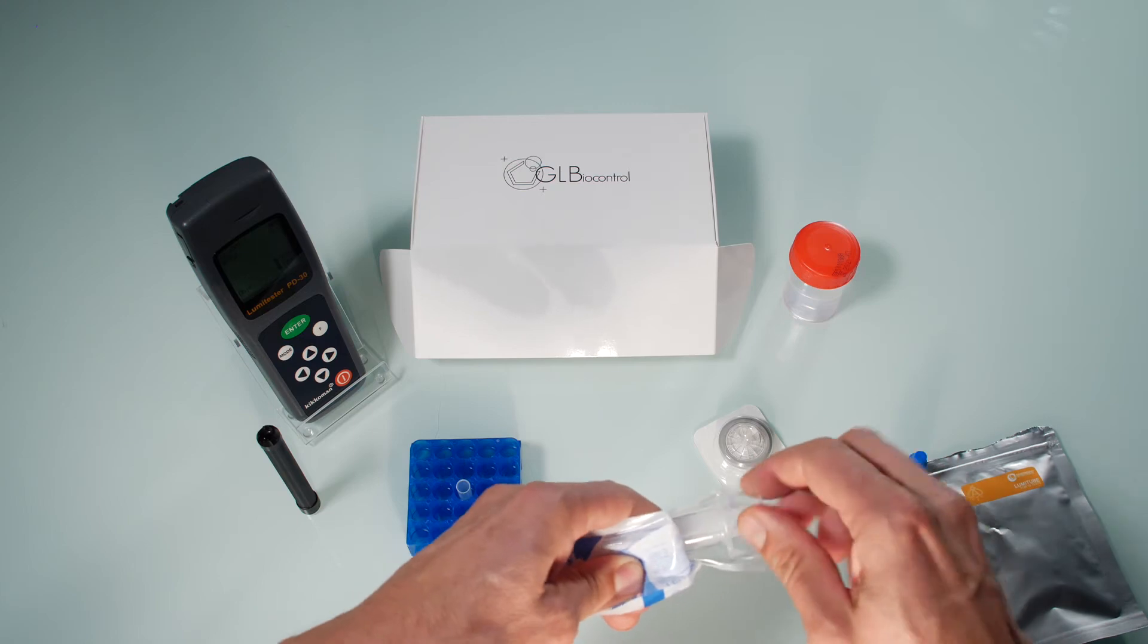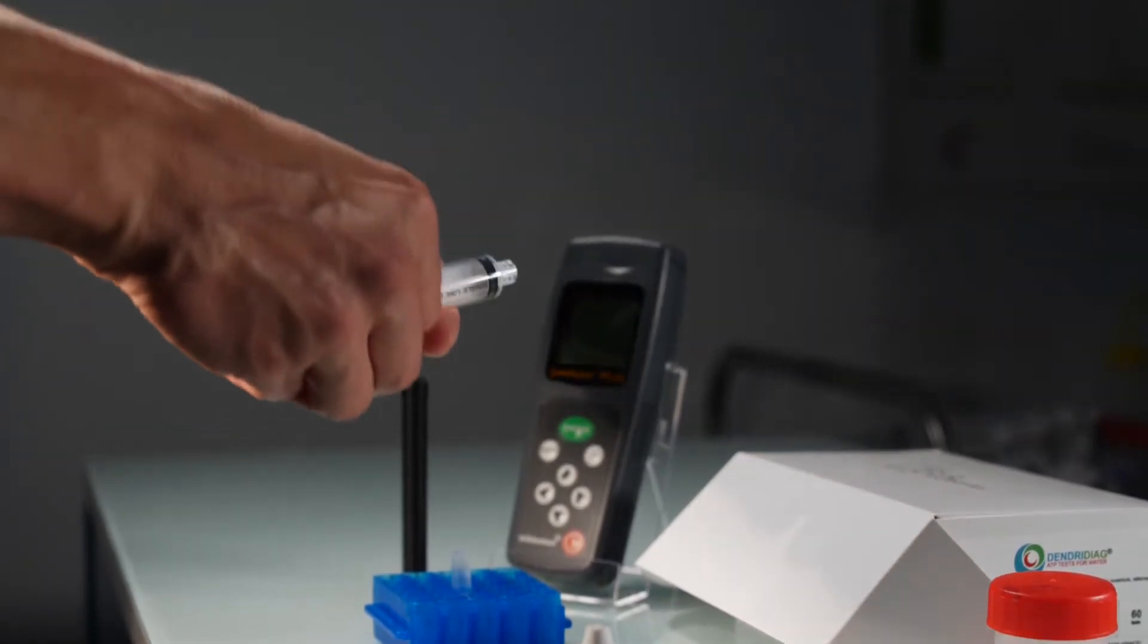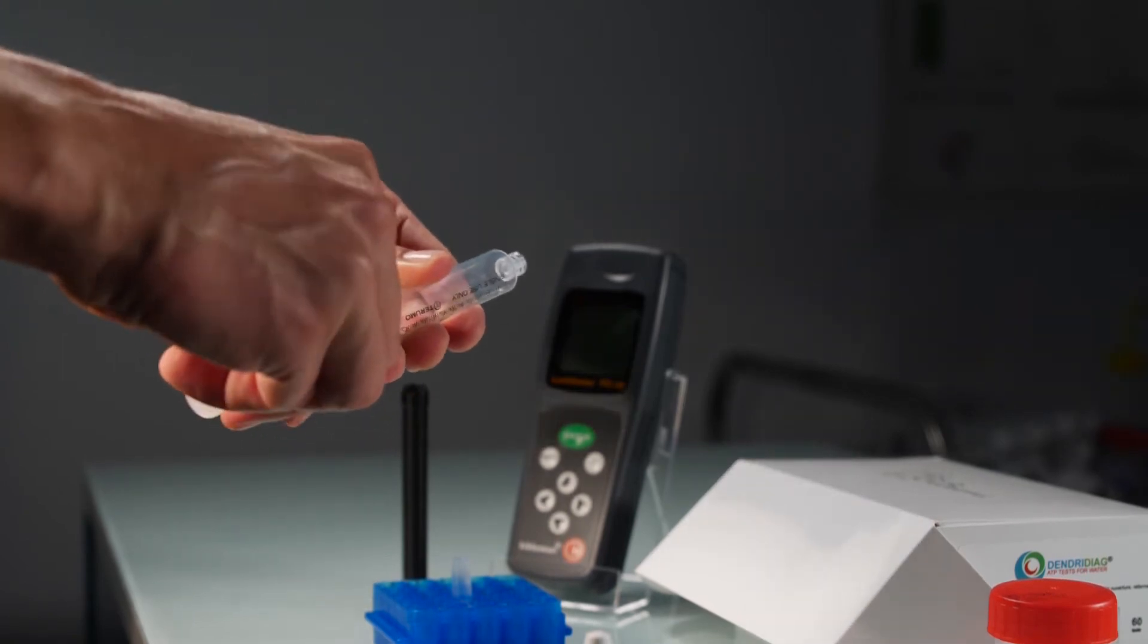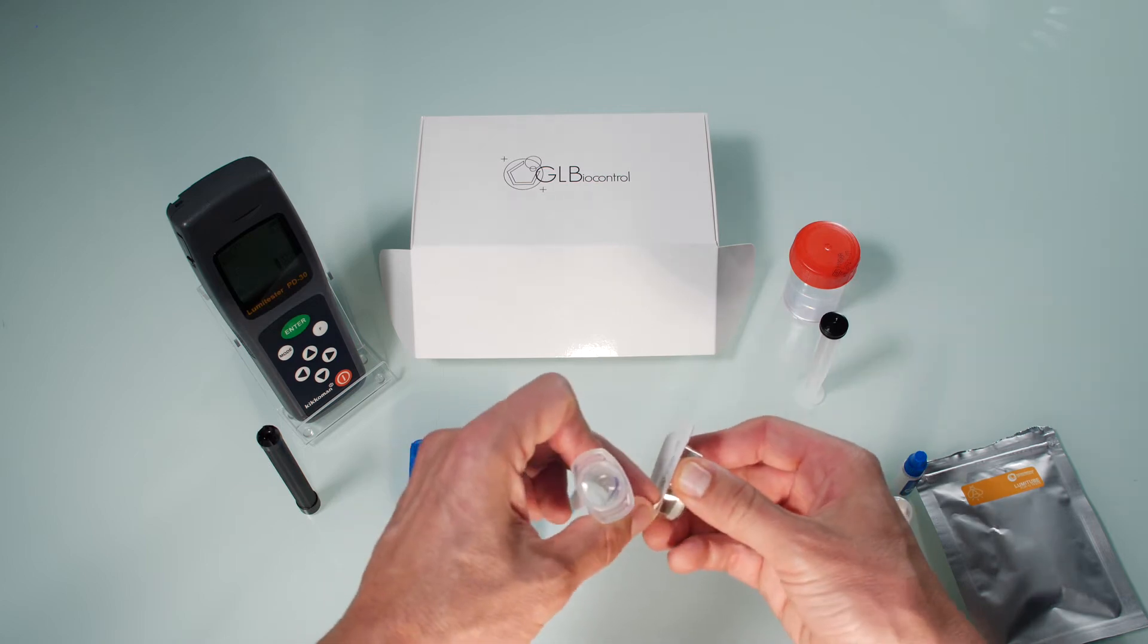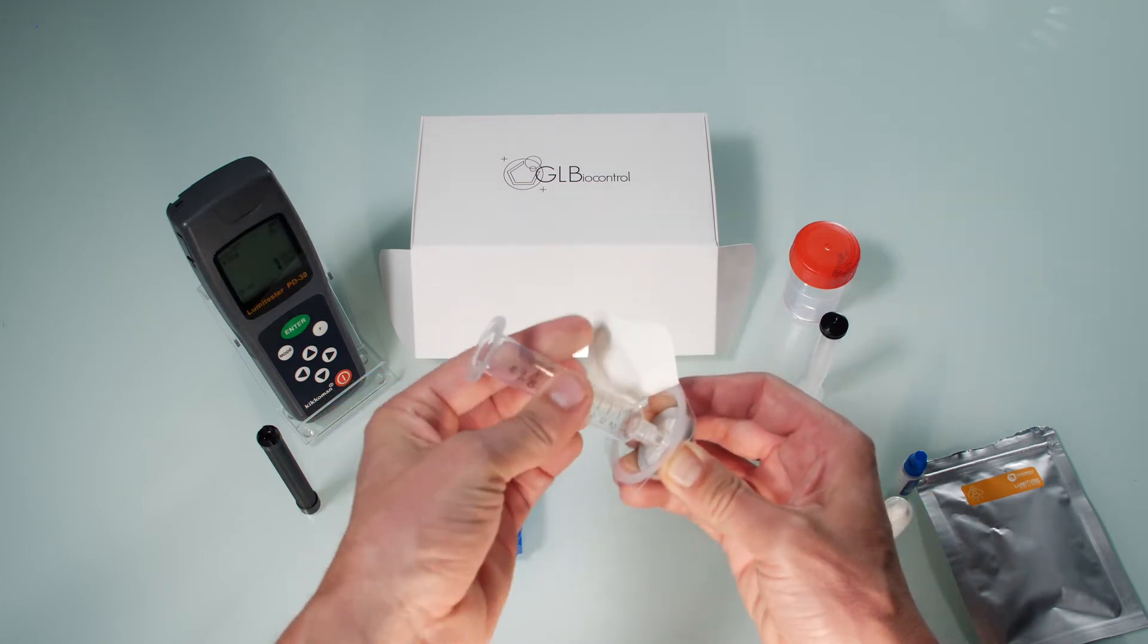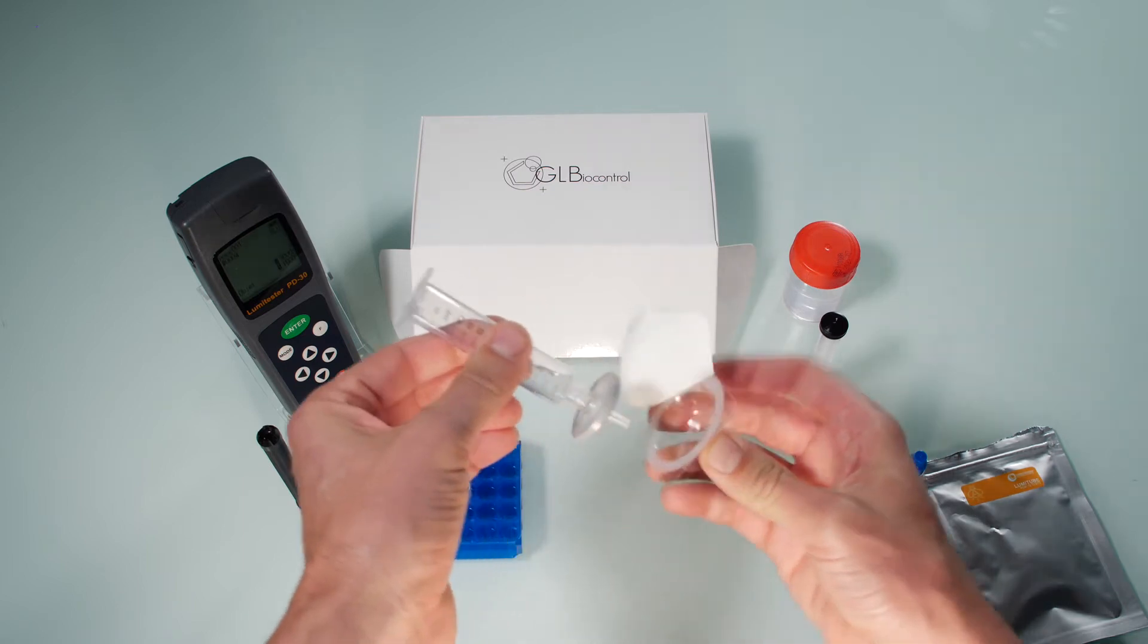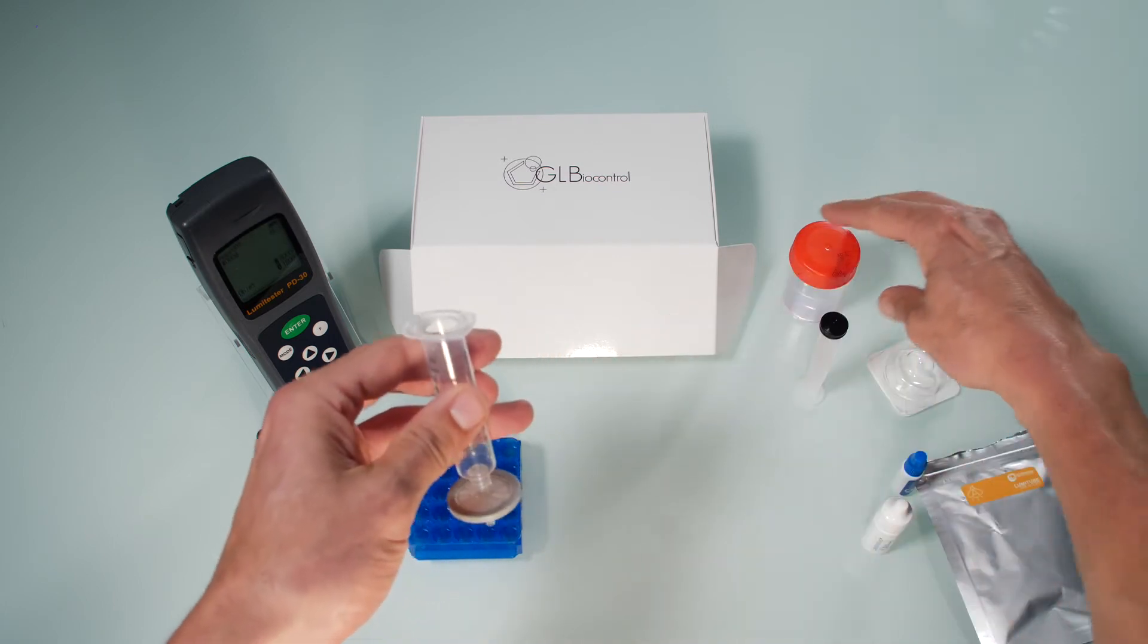Unpack the syringe being careful not to touch the tip. Then remove the plunger and put it on the work surface. Don't touch the black part of the piston. Peel off the cover of the filter pack and screw the syringe onto the filter. Keep the plastic packaging clean. It will be used later on.